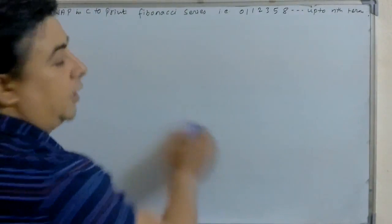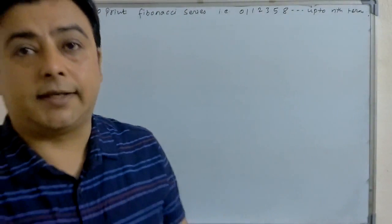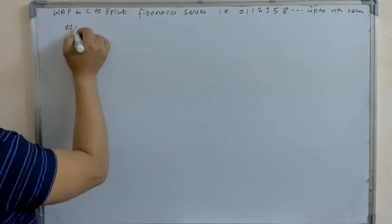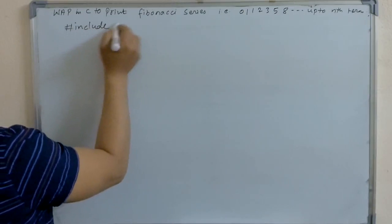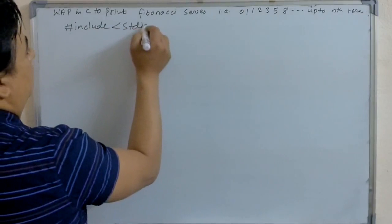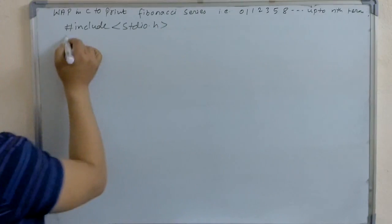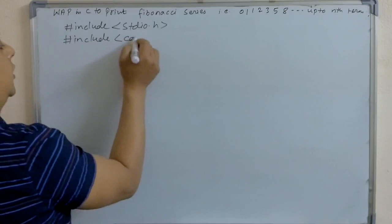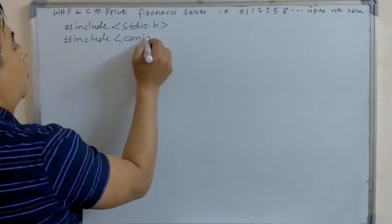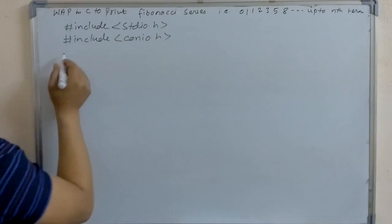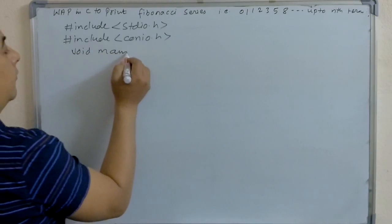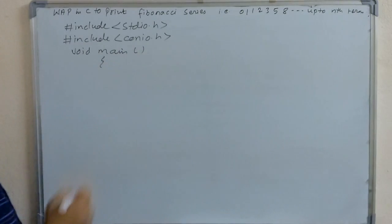So how do we write a C program for the Fibonacci series? Let's start the program with the header files: #include stdio.h and #include conio.h. Then void main — the program always starts with the main function.